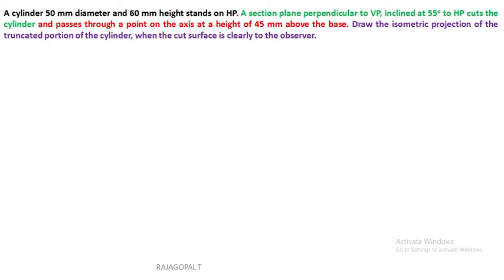Welcome back to Rajagopal Thangavel's forum. In this session we will discuss isometric projection of the truncated cylinder. Read the question: a cylinder 50 mm diameter and 60 mm height stands on HP. A section plane perpendicular to VP, inclined at 55 degrees to HP, cuts the cylinder and passes through a point on the axis at a height of 45 mm above the base. Draw the isometric projection of the truncated portion when the cut surface is clearly visible to the observer.